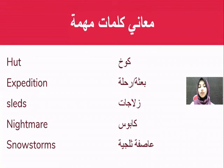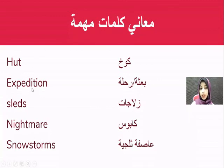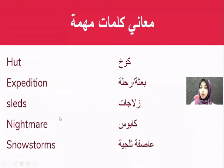Before we start with the reading passage, let's explore some new words. 'Hut' means a small shelter — like people in the North Pole or Antarctic build huts to live in. 'Expedition' means a journey or mission — explorers go on expeditions to explore places. 'Sleds' are snow sledges. 'Nightmare' means a bad dream or terrible experience. 'Snowstorms' are blizzards.